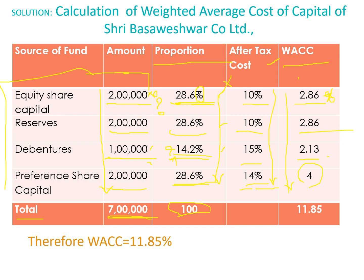By adding all these amounts, you will arrive at 11.85%. This is the weighted average cost of capital of Shri Basaveshwara Company Limited.